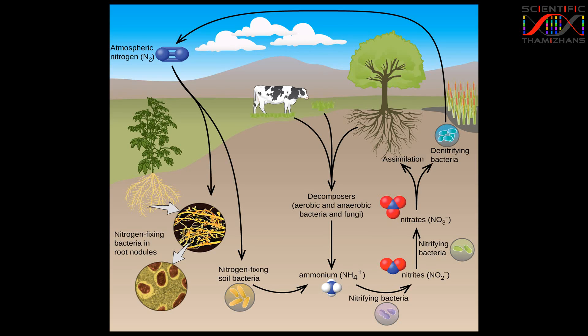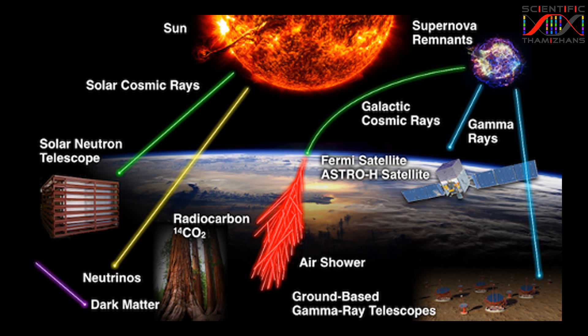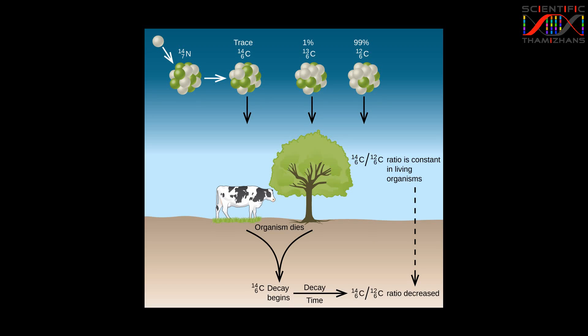If you look at the atmosphere, nitrogen is present. Cosmic rays interact with nitrogen. The stable nitrogen becomes unstable carbon-14. That is why carbon-14 is a radioactive molecule.